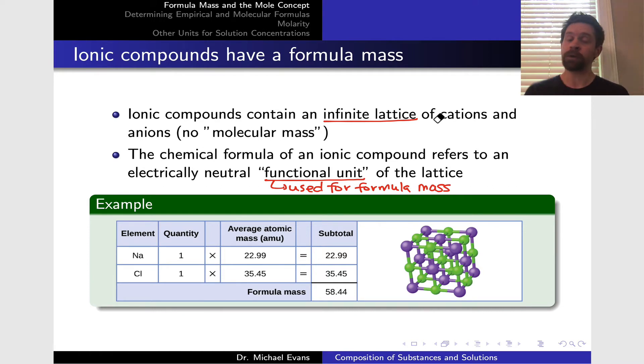To find the formula mass for NaCl, we add up the average atomic masses of sodium, 22.99, and chlorine, 35.45, for a total of 58.44. The units are atomic mass units. We can apply this number at a macroscopic scale, but not until we've defined the mole, which we'll do here shortly.